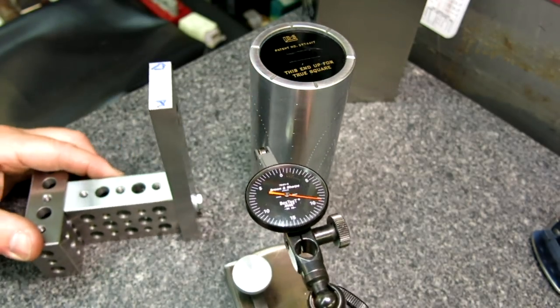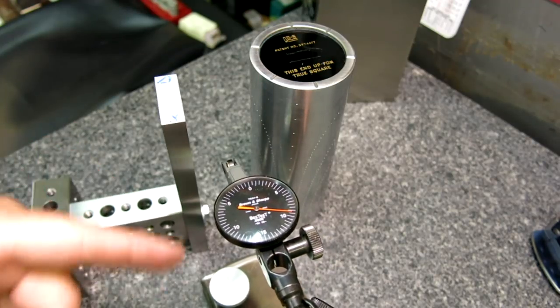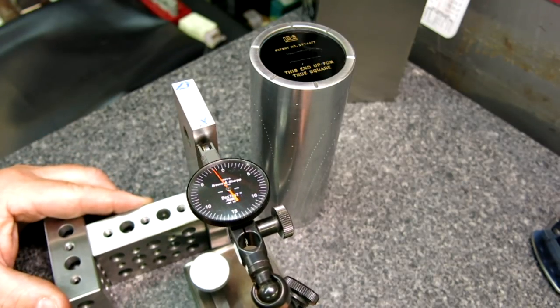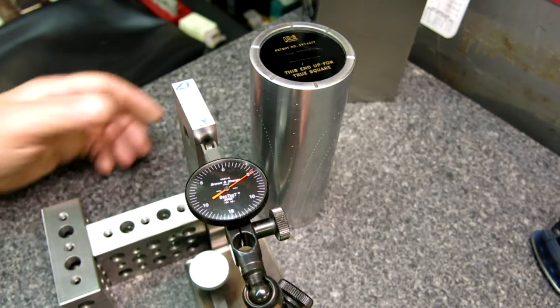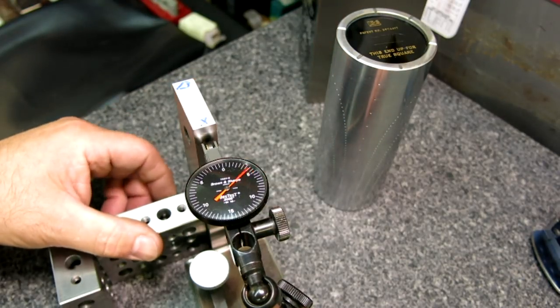Anyway, that's how that works. So we've just created a perfect right angle with something that's not square at all.